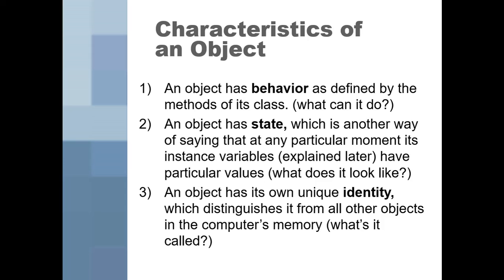Objects also have a state, which is another way to say what, at the particular moment, are its instance variables — AKA what variables are stored into this. What's the current name of our student? What does it look like? That is the state. And then an object has its own unique identity, which distinguishes it from all other objects in the computer's memory.